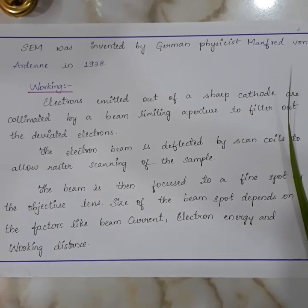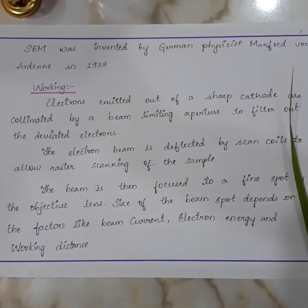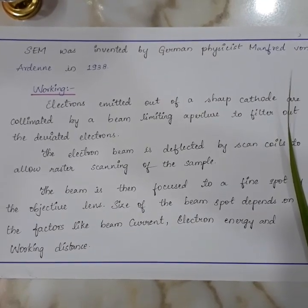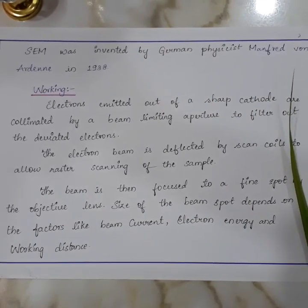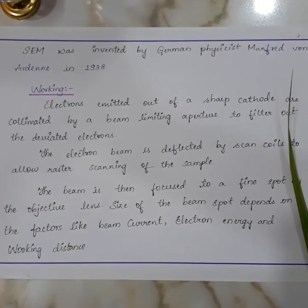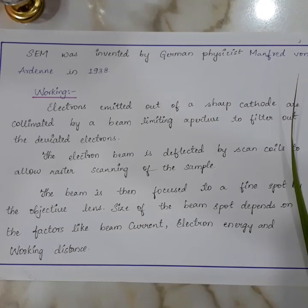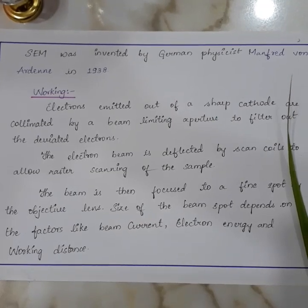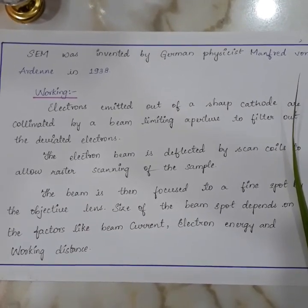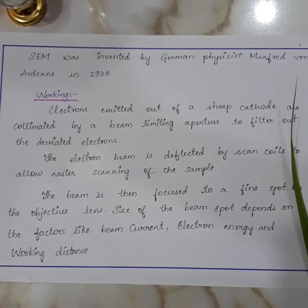Electrons emitted out of a sharp cathode are collimated by a beam-limiting aperture to filter out deviated electrons. The electron beam is deflected by scan coils to allow raster scanning of the sample. The beam is then focused to a fine spot by the objective lens.